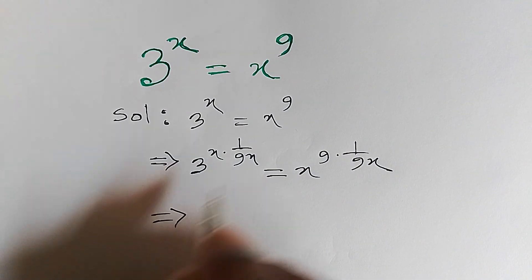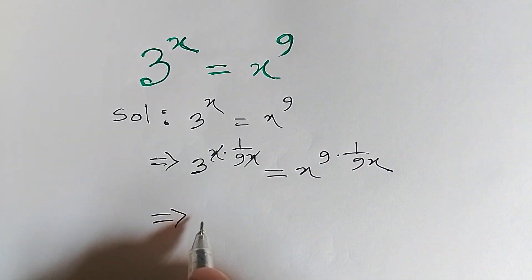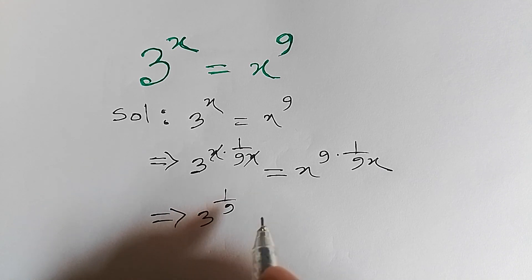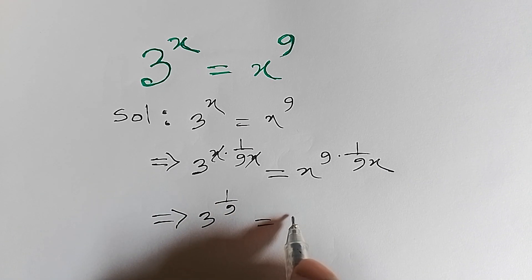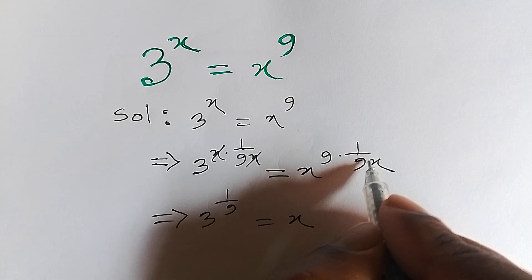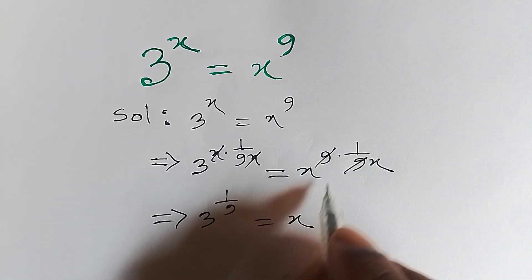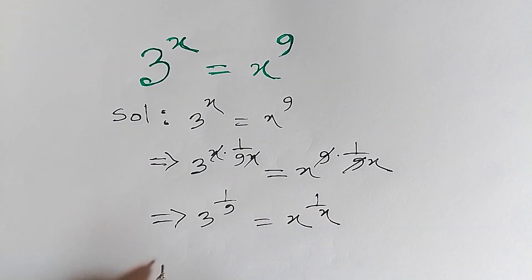The x cancels with x, and 9 cancels with 9, so 3 to the power 1 over 9 equals x to the power 1 over x.